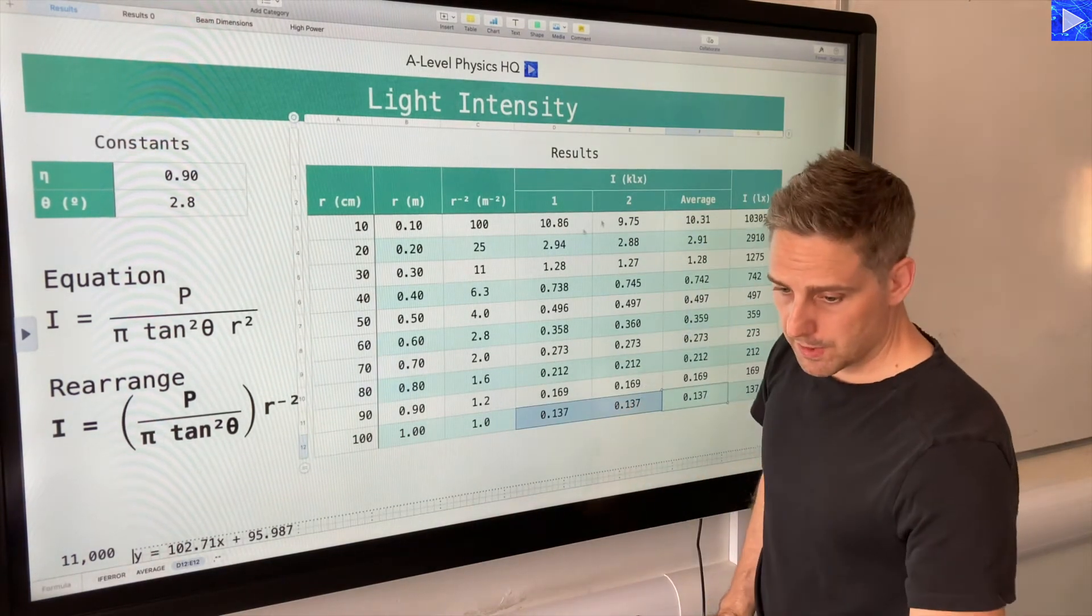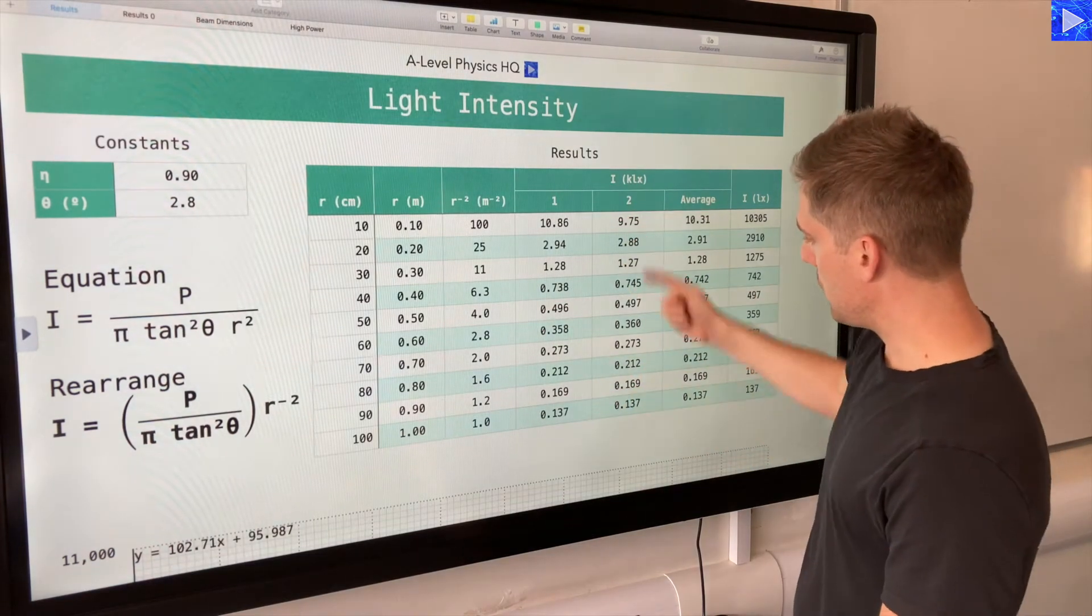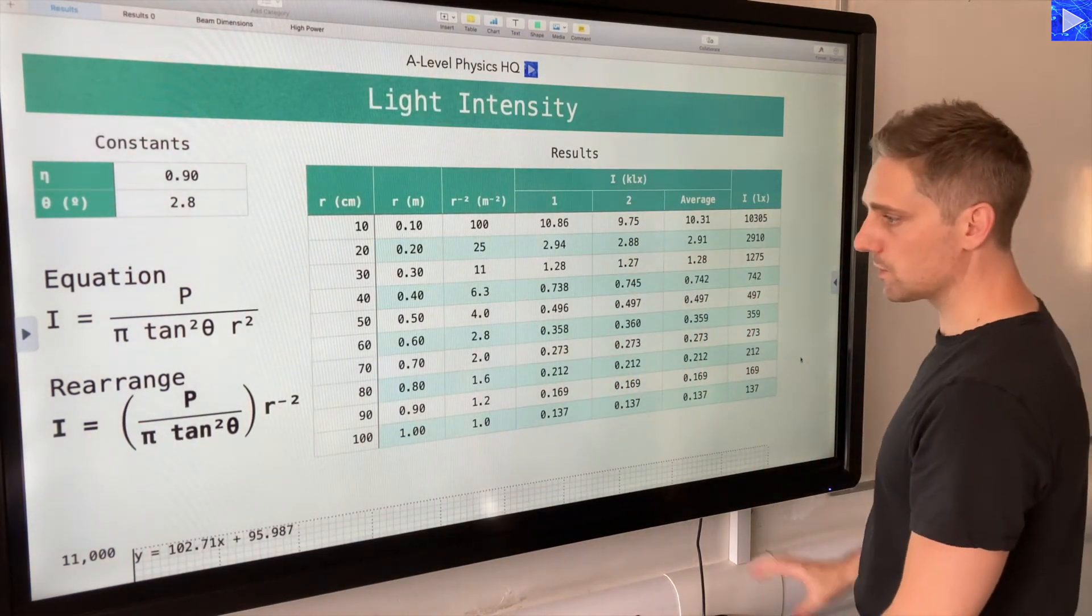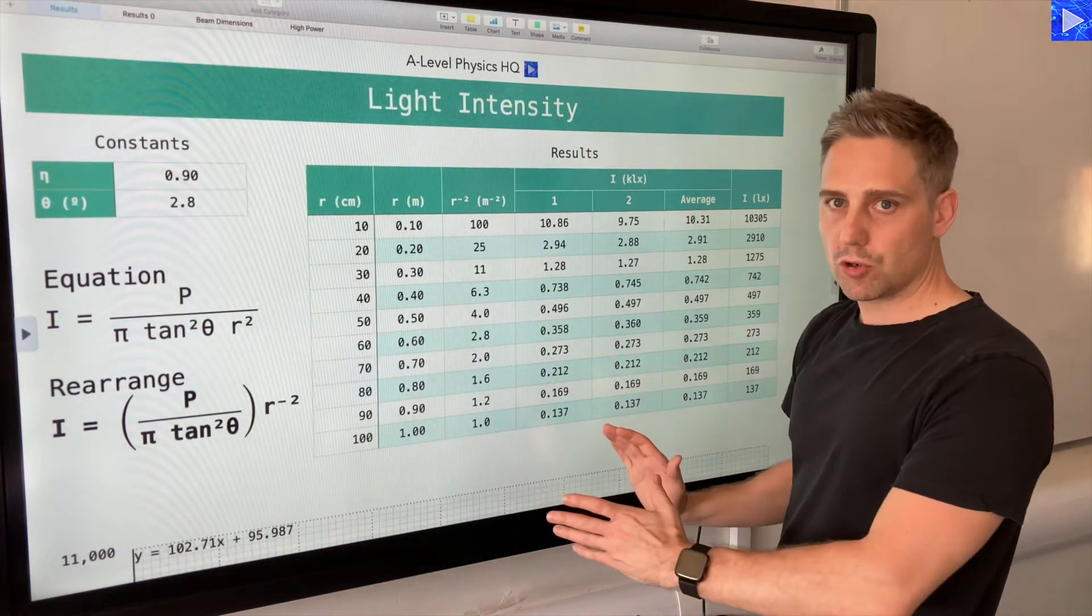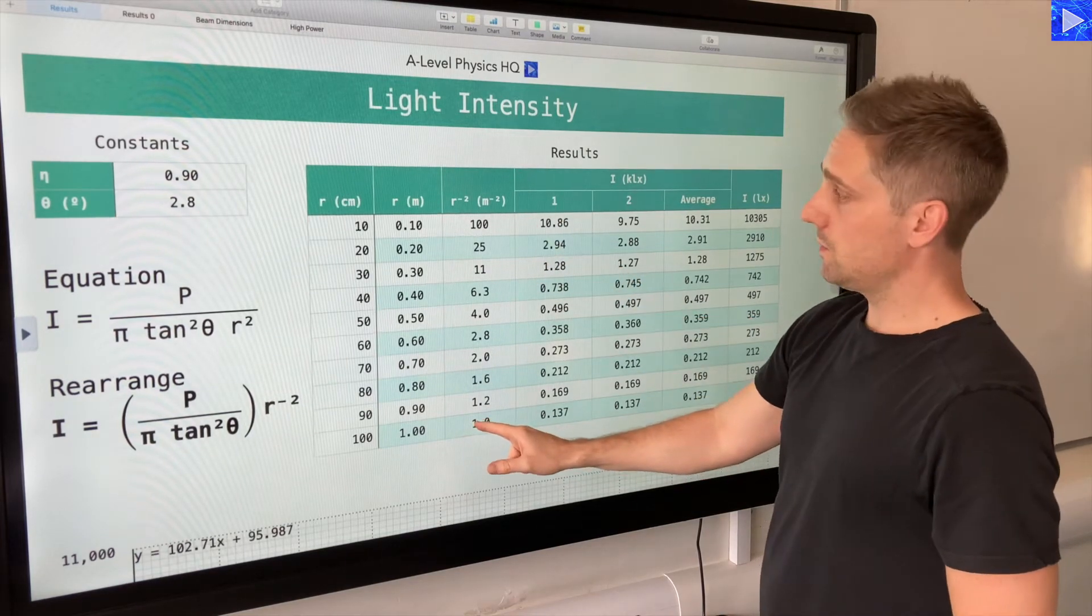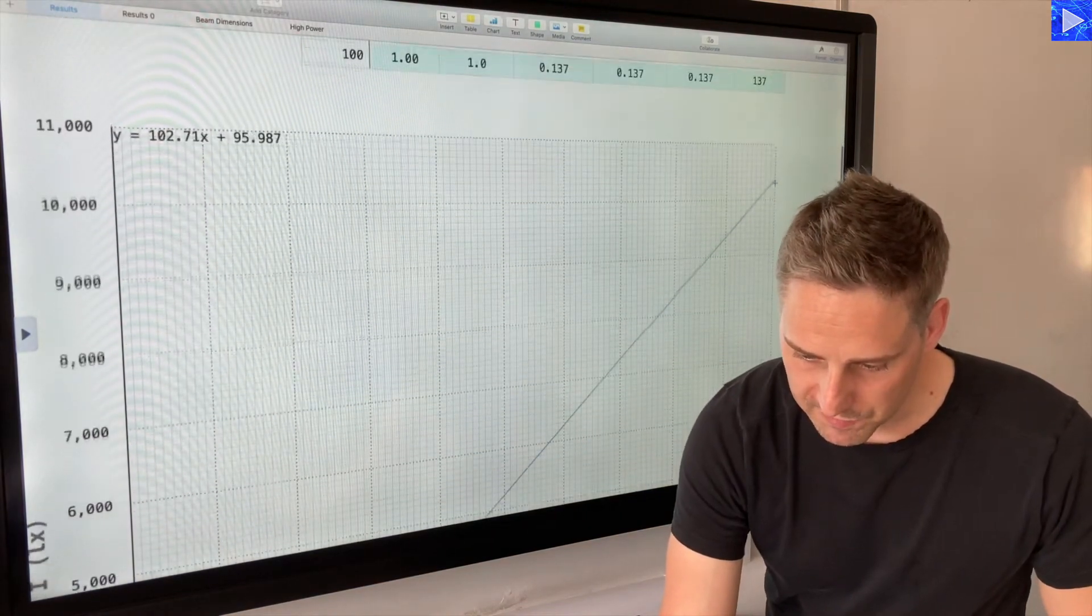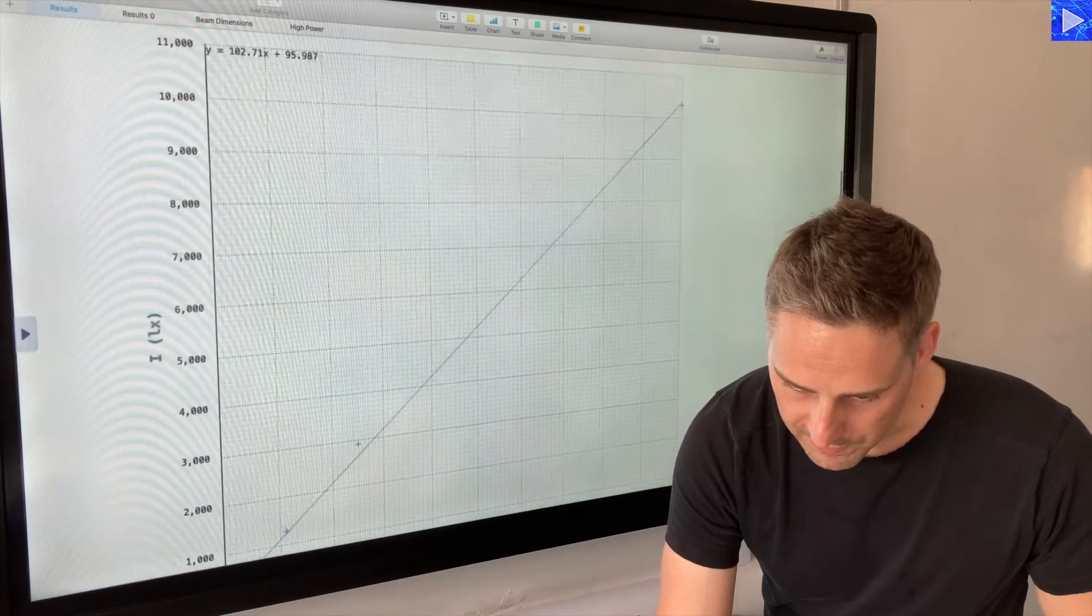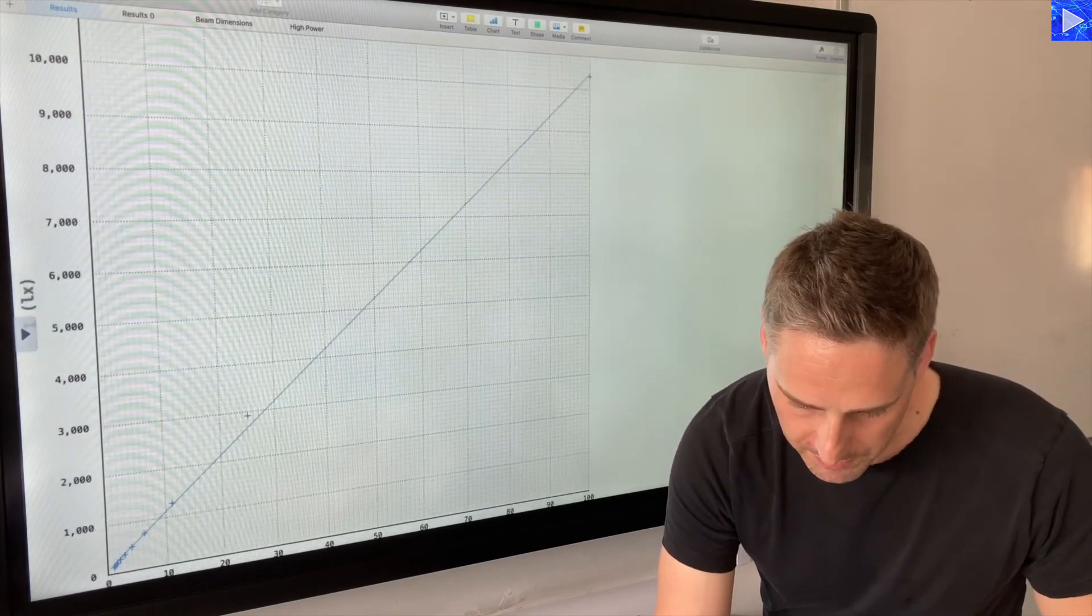All right, there we go. So these are the values that I measured in video one. There's the average, there's the values in lux. Great. So what we're going to do first is see how that came out on a straight line graph, plotting r to the minus two versus the intensity. So it's down here. Now because of the nature of the data, you'll notice that a lot of the data points got bunched up down the bottom here.